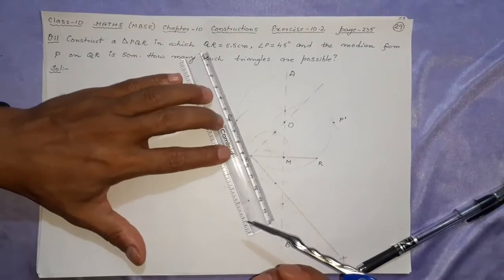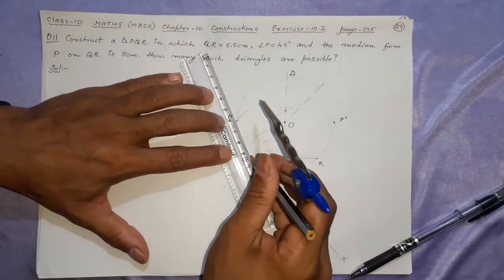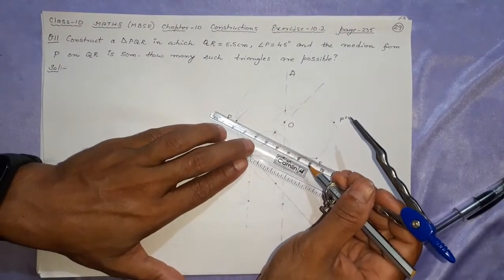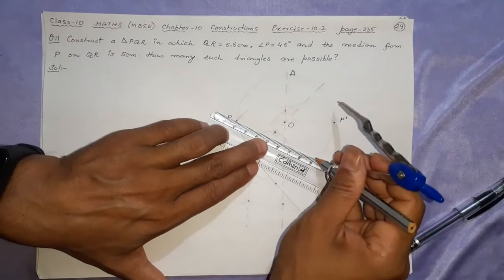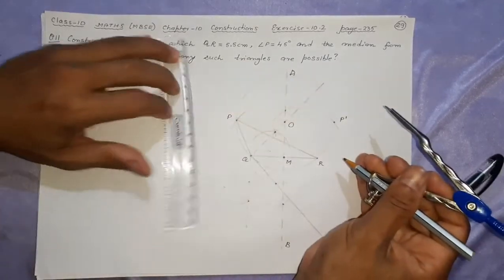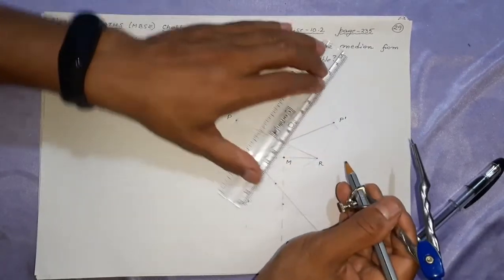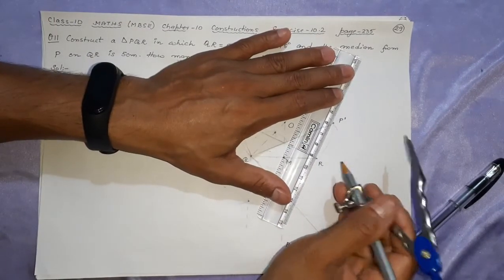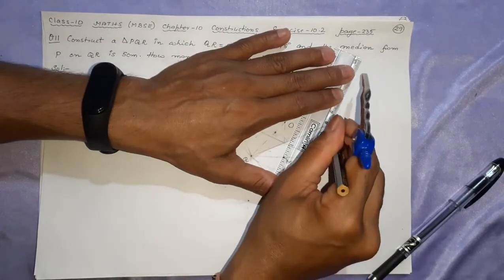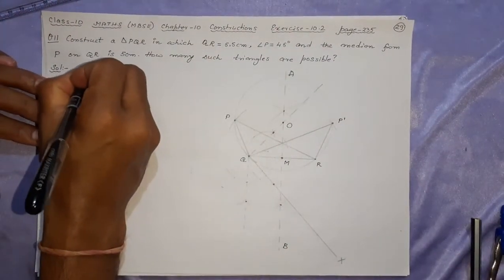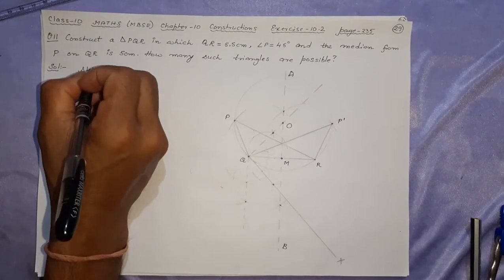Now joining PQ, join now PR. This is the first triangle ready. Second triangle: now P dash Q and P dash R. This will ensure that there are two triangles.